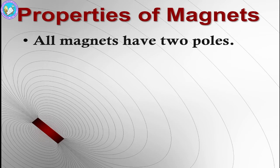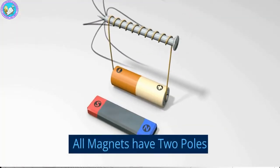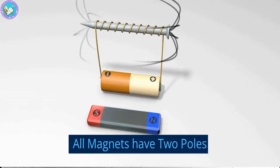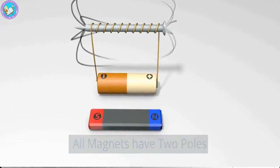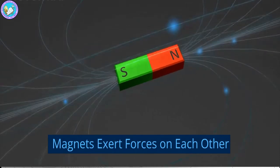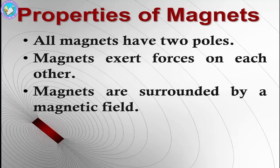In the next slide we are going to see the properties of magnets. The first property is that magnets have two poles, which are the north pole and south pole. The second property is that magnets exert forces on each other. The third one is that magnets are surrounded by a magnetic field.